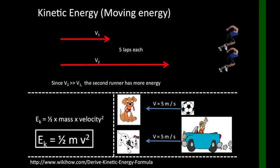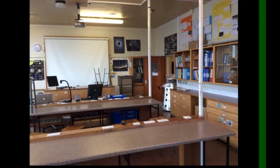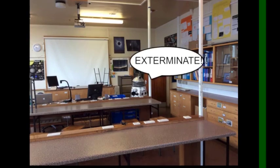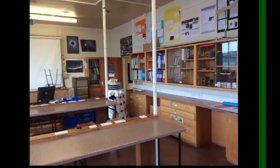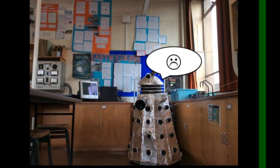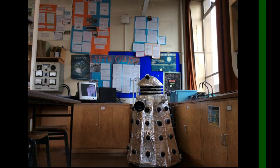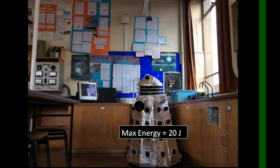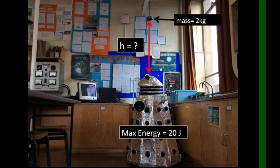You might think this is all very theoretical and not very useful, but I promise you there are some very good real world applications. For example, I was doing some marking one day when suddenly a Dalek walks into my classroom. Thankfully, my classroom is fitted with anti-Dalek defenses, so it all worked out okay in the end. If our Dalek is able to absorb 20 joules of energy before its shields fail, and we're using a 2 kg mass, how high does the mass have to be to deliver enough energy to break through the shields?